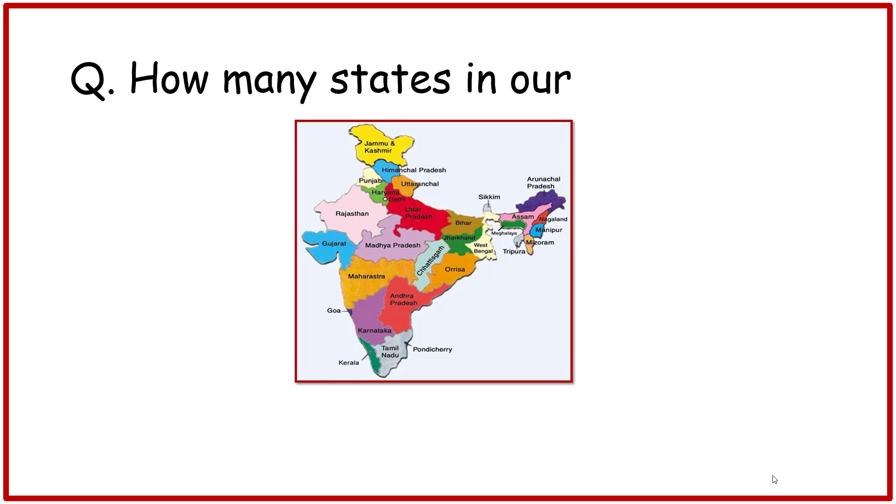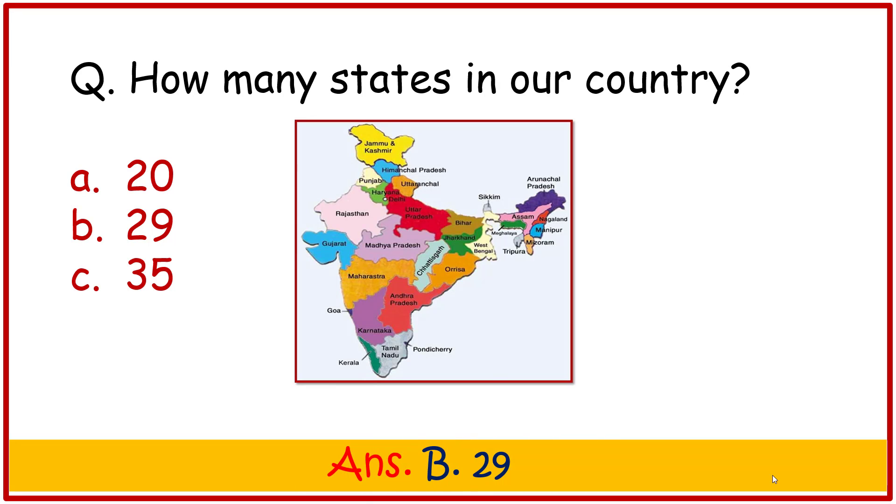Question. How many states in our country? A 28, B 29, C 35. Correct answer is B 29. Friends, there are 29 states in our country.